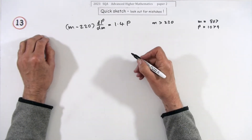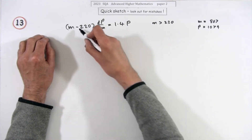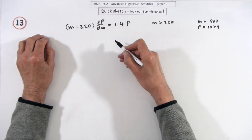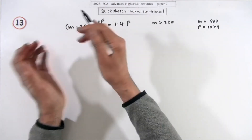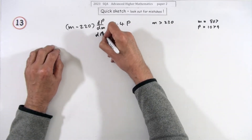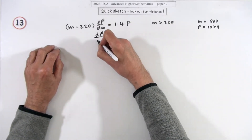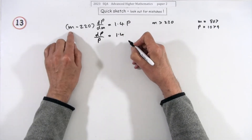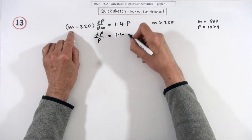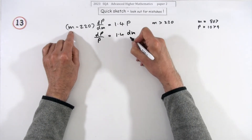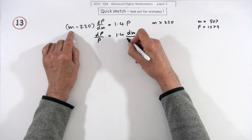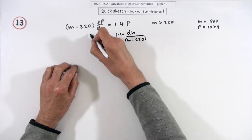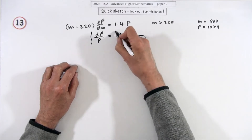To solve that differential equation, the variables are separable — you can put all the p's on one side and all the m's on the other. So dp over p would be 1.4, with dm on top and m minus 220 underneath. Then integrate both sides.